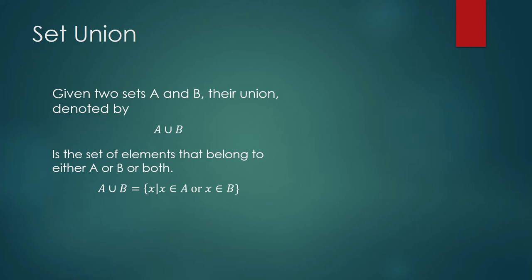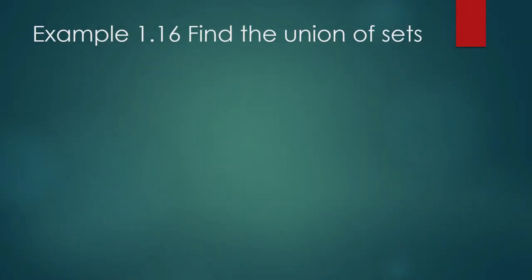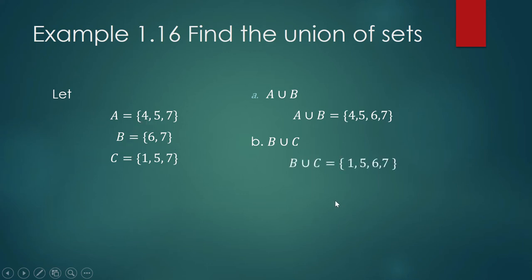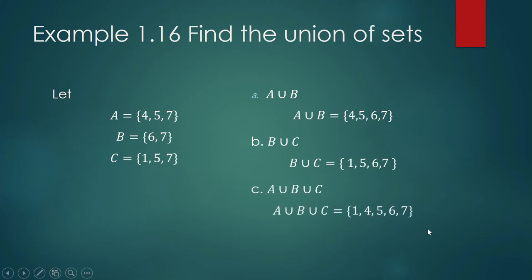Find the union of sets. Suppose we have these three sets. A union B is {4, 5, 6, 7}. How about B union C? B union C is {1, 5, 6, 7}. Pay attention: even though 7 is an element of both A and B, we do not list 7 twice — we list each element only once. A union B union C equals that set as well.